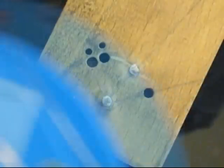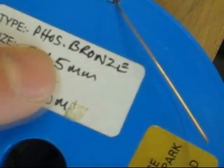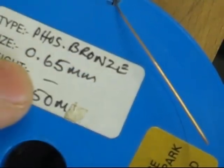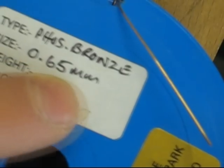OK, there we go. It's my spring jig, and I used phosphor bronze. This time it's going to be 0.65mm diameter.